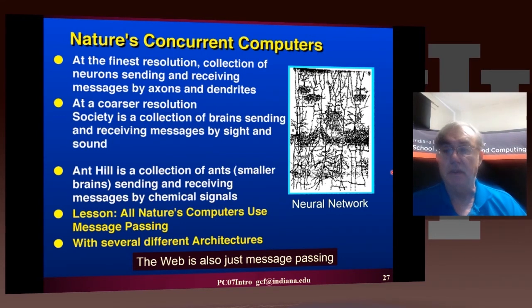This points out that if we look at nature, if we look at the brain, it's a bunch of neurons sending messages by using axons and dendrites, so it's using message passing. If we go to our favorite cloud computing, those computers are also communicating by messages. If we look at actually society, society is people. Those people are talking to each other, so they're a collection of brains and they're actually sending messages. These messages are done by, in this particular case here, we're doing it by recording a video, so by sending a message. This video is a message which I'm sending to you. If we take an ant hill, they actually use chemical signals and drop them on the ground to send messages. So nature's computers use message passing, and they do that with several different architectures.